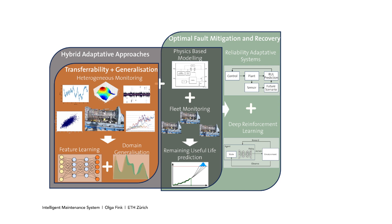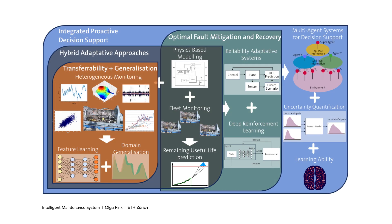In the fourth layer we look into integrated proactive decision support systems, where we combine information from the previous layers and move beyond single systems to integrate information at system level and partly at network level. Here we also integrate information on operation requirements and constraints from resource availability, providing optimal information to decision makers.